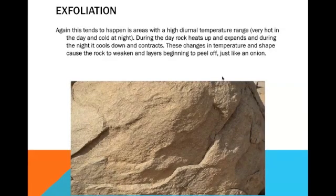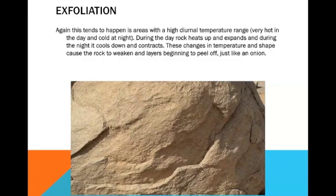Exfoliation also tends to happen in areas with a high daily temperature range. During the day, the rock heats up and expands. During the night, it cools down and contracts. These changes in temperature and shape cause the rock to weaken, and layers begin to peel off, just like an onion. It's fairly similar to freeze-thaw, except that it's not water expanding and contracting — it's the actual rock itself. The layers peel off from the outside rather than breaking from the inside.